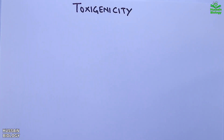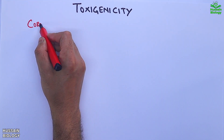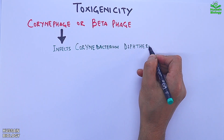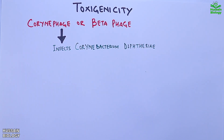First, let's see the toxigenicity of Corynebacterium diphtheriae — how the toxin is produced in the bacteria. The corny phage, or beta phage, infects Corynebacterium diphtheriae, and then the phage integrates its DNA with the bacterial chromosome. Importantly, the phage DNA contains the tox gene.